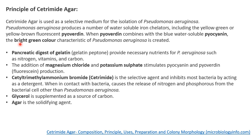About the ingredients: pancreatic digest of gelatin, or gelatin peptone, provides necessary nutrients such as nitrogen, vitamins, and carbon. Addition of magnesium chloride and potassium sulfate stimulates the production of pigments — that is, pyocyanin and pyoverdine. So the role of magnesium chloride and potassium sulfate is to stimulate pigment production.